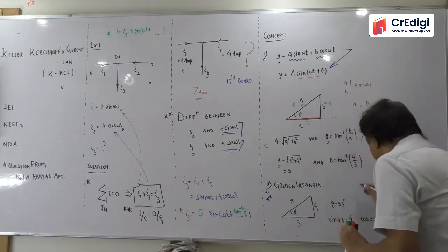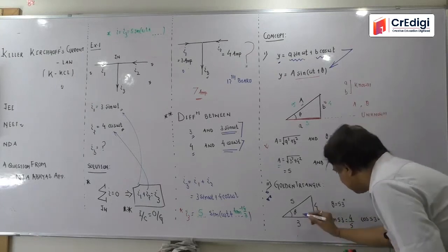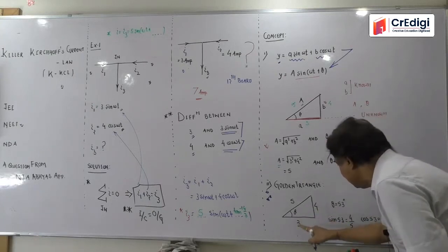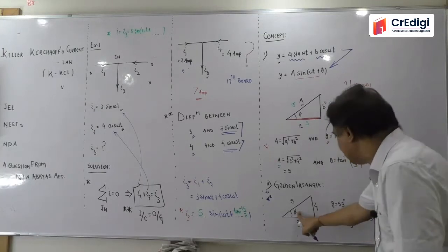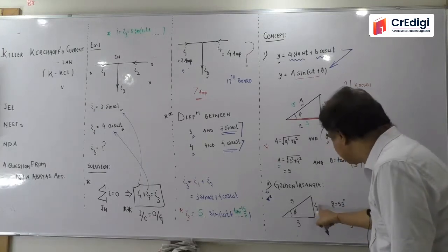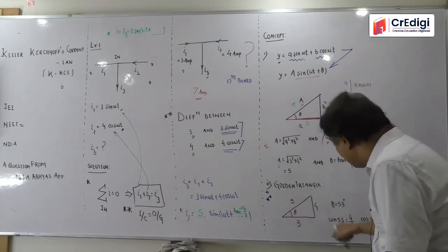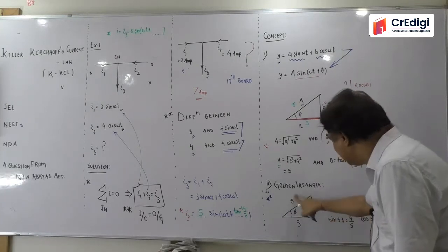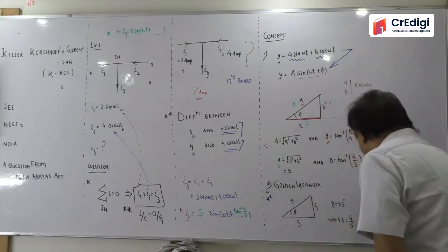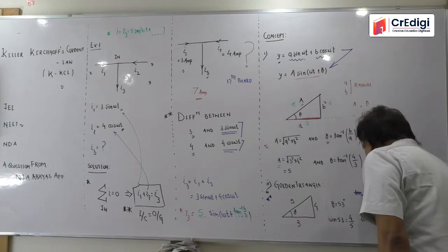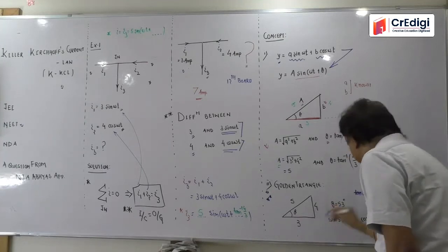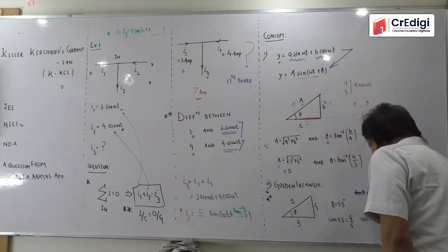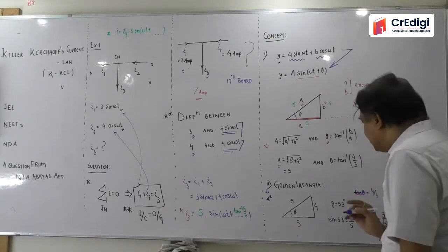You will see this twice. Here this angle theta is how much? 53 degree. Now do whatever you want. Suppose you want to find, sir, what to find first? I will find it and show you. Sin theta, sin 53. Theta is 53 degree. Sin 53.